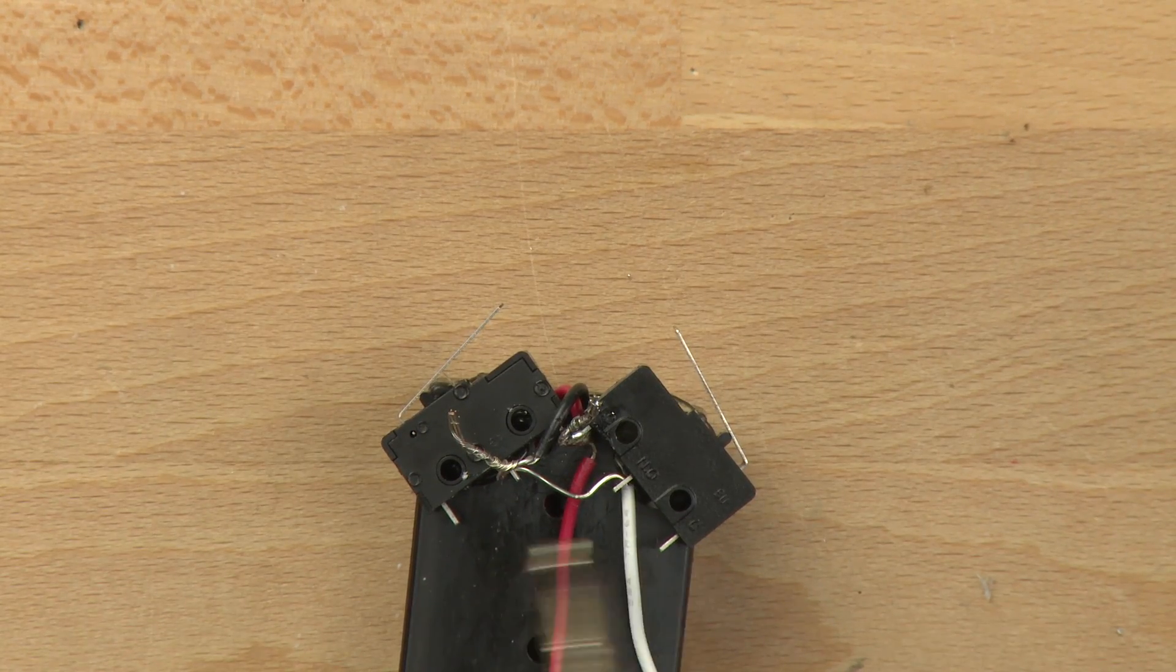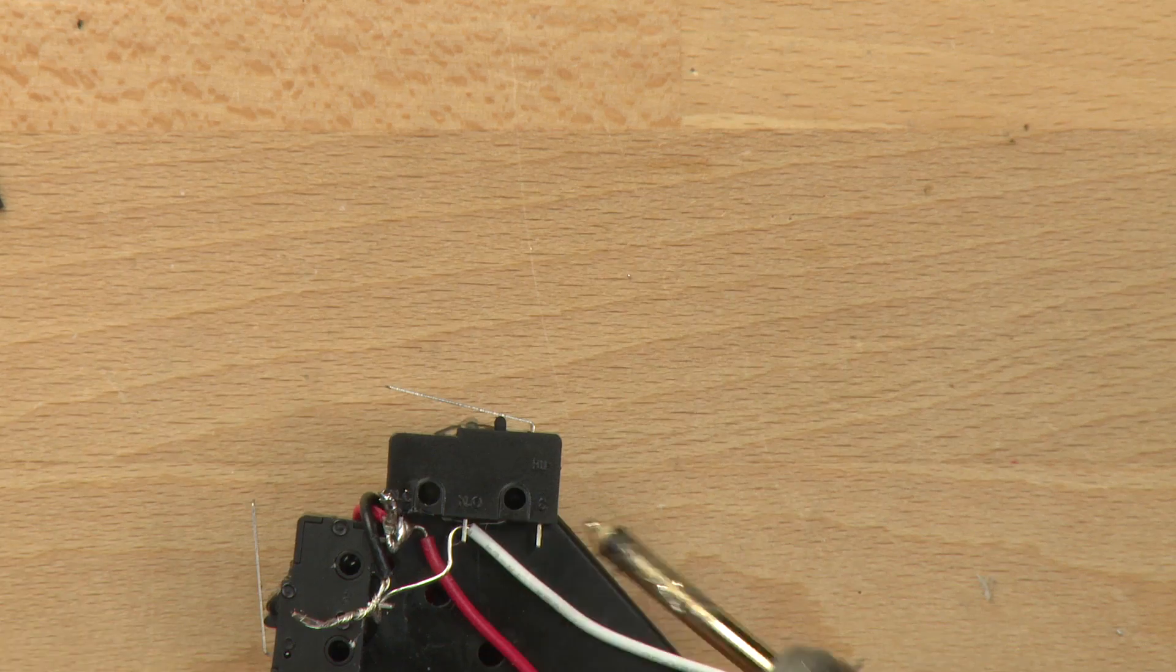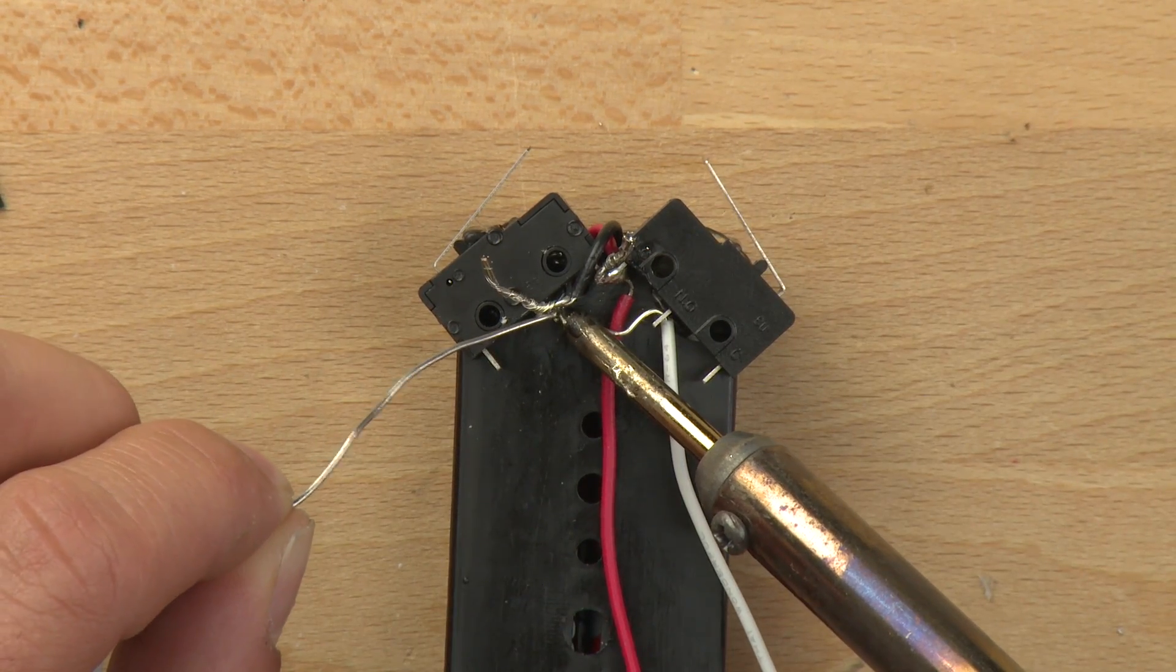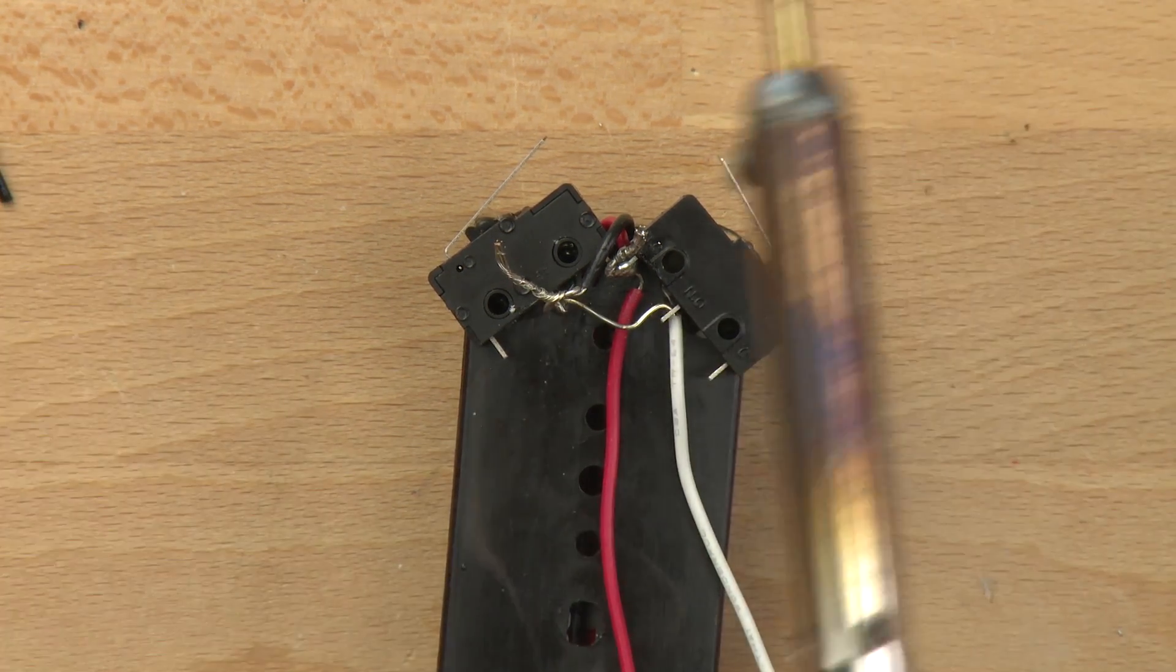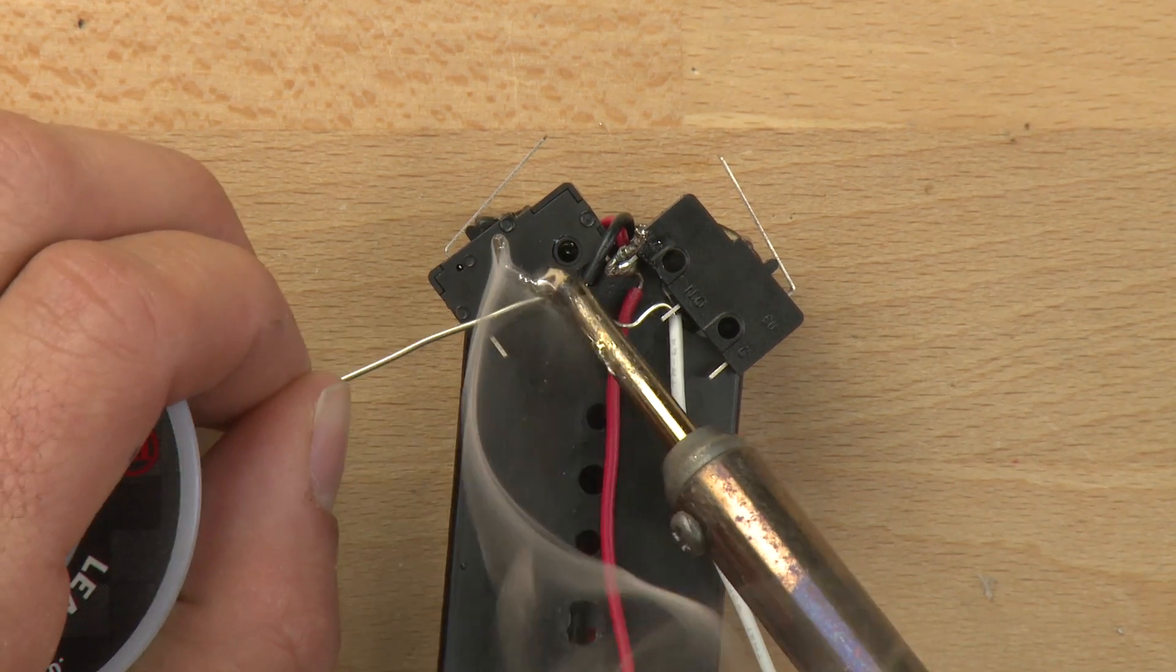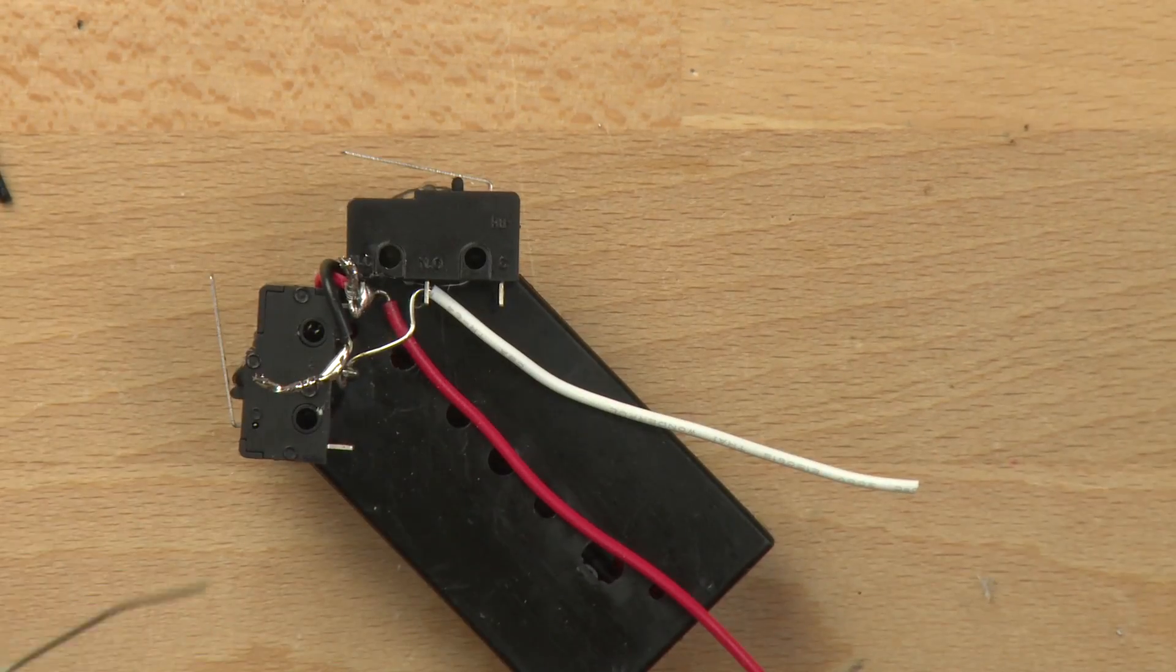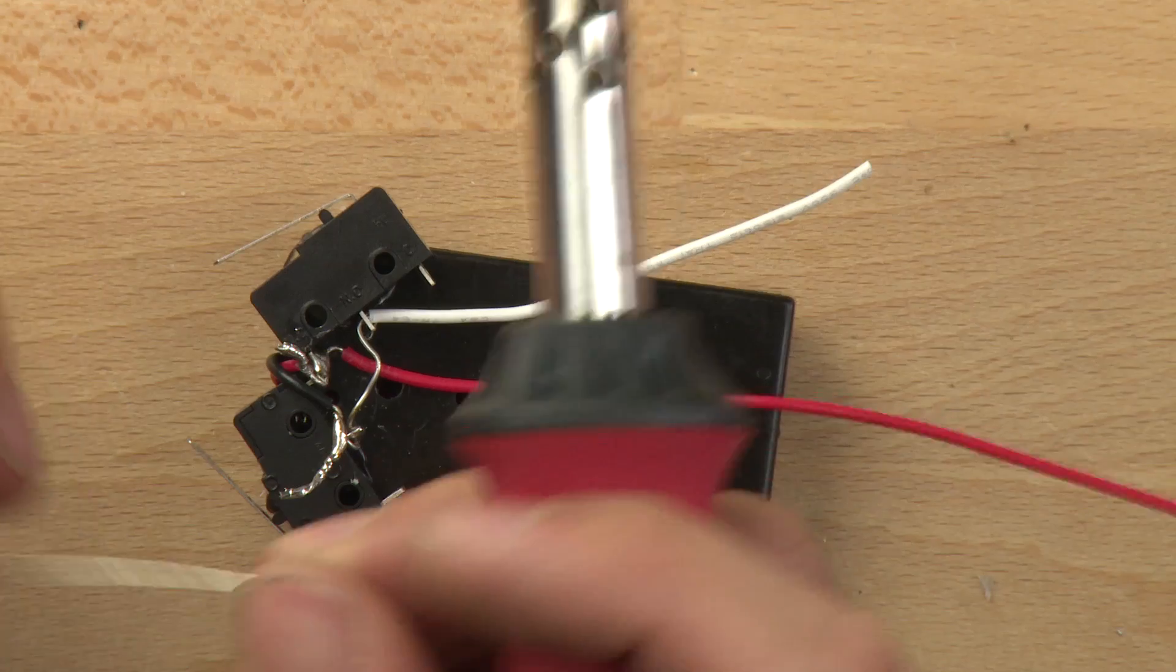So now we should be able to take our solder and solder all the parts together. So we're going to solder the wire and the switch right here. And then we're going to solder the black wire and the white wire to the other side, the other switch.